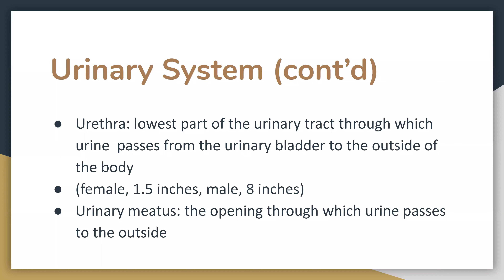In the female, the urethra is 1.5 inches, and in the male, it's eight inches long. The urinary meatus is the opening through which the urine passes to the outside.